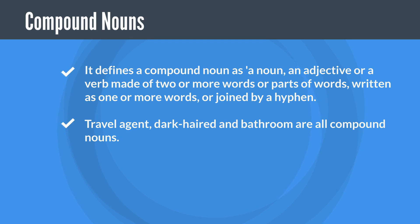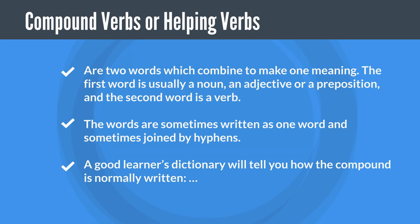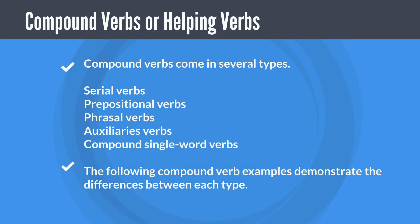'Travel agent,' 'dark-haired,' and 'bathroom' are all compound nouns. Compound verbs — or helping verbs — are two words that combine to make one meaning. The first word is usually a noun, an adjective, or a preposition, and the second word is a verb. The words are sometimes written as one word and sometimes joined by hyphens. Compound verbs come in several types: serial verbs, prepositional verbs, phrasal verbs, auxiliary verbs, and compound single-word verbs.